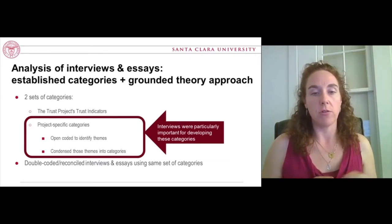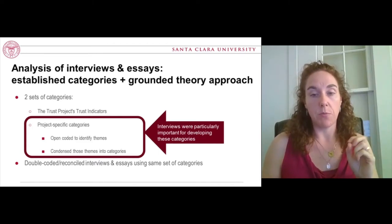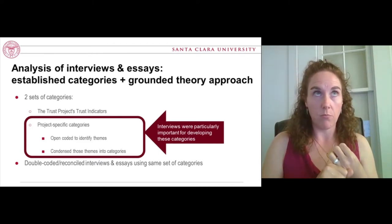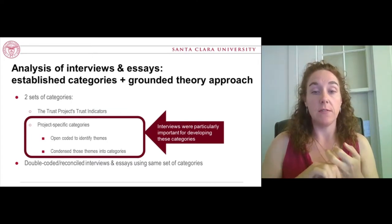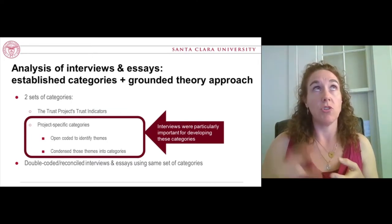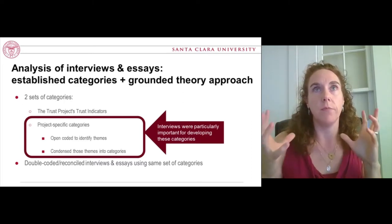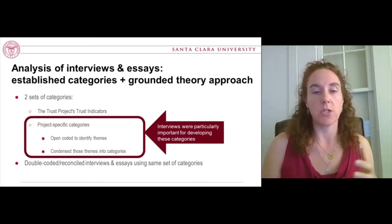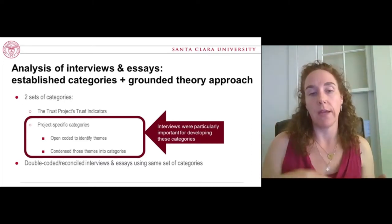For trust indicators, we used more of a scale. If in the interview or the essay the participant used that source criteria, they received a one; if they didn't use it, they received a zero; or if they explicitly rejected that as a valid parameter for source selection, they received a score of negative one.